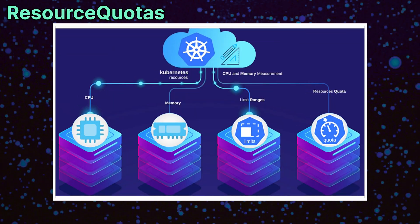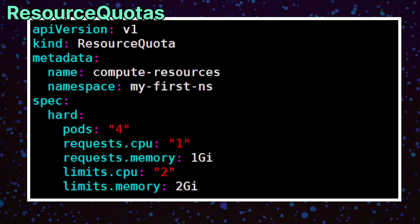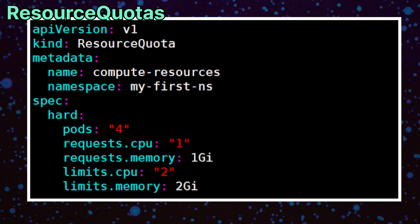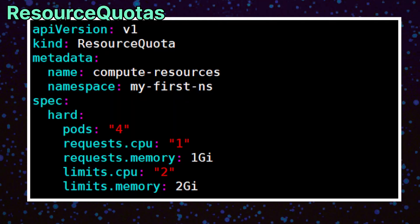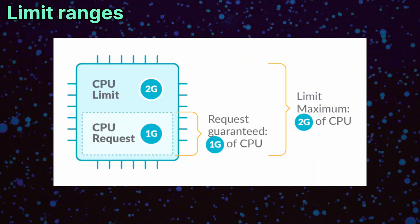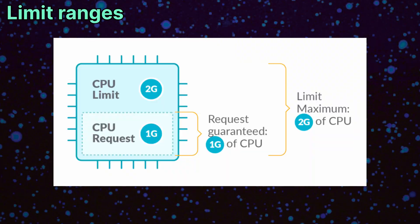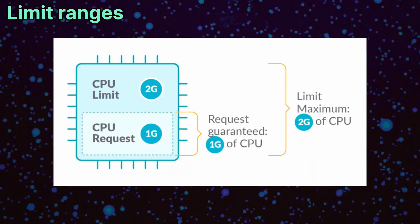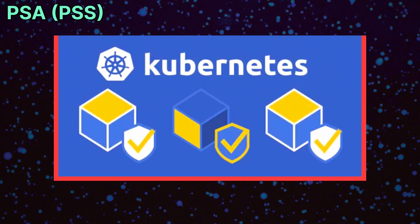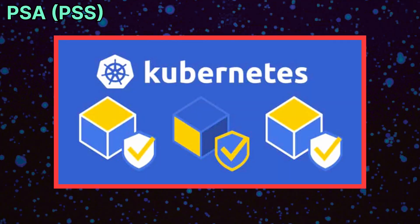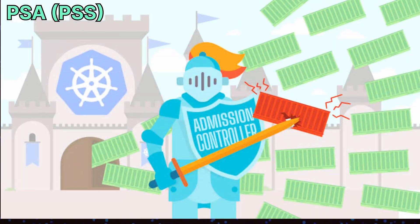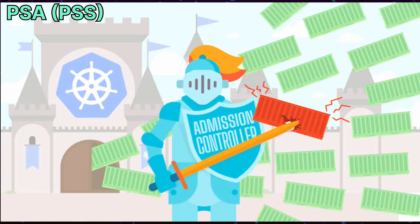To control resources, resource quotas limit how much CPU, memory, or storage a namespace can use, while limit ranges set default or maximum values for pods. Pod-level security, like blocking privileged containers or forcing non-root users, is handled with pod security admissions.